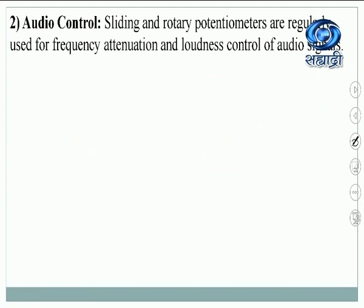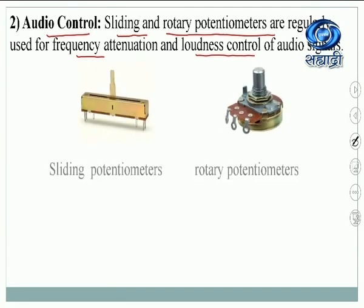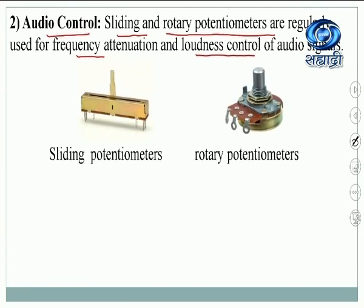Next, the potentiometer can be used as an audio control. In all radios, the rotating knob that decreases or increases the sound — that is the potentiometer. Sliding and rotary potentiometers are regularly used for frequency attenuation, to change the frequency, and also to change the loudness. There are two types: the sliding potentiometer and the rotary potentiometer.